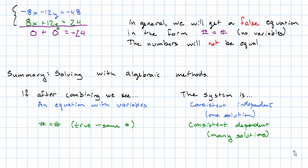And finally, if after combining our equations we see something that looks like a number equals a number and it's false, different numbers, then the system is inconsistent and it has no solution.